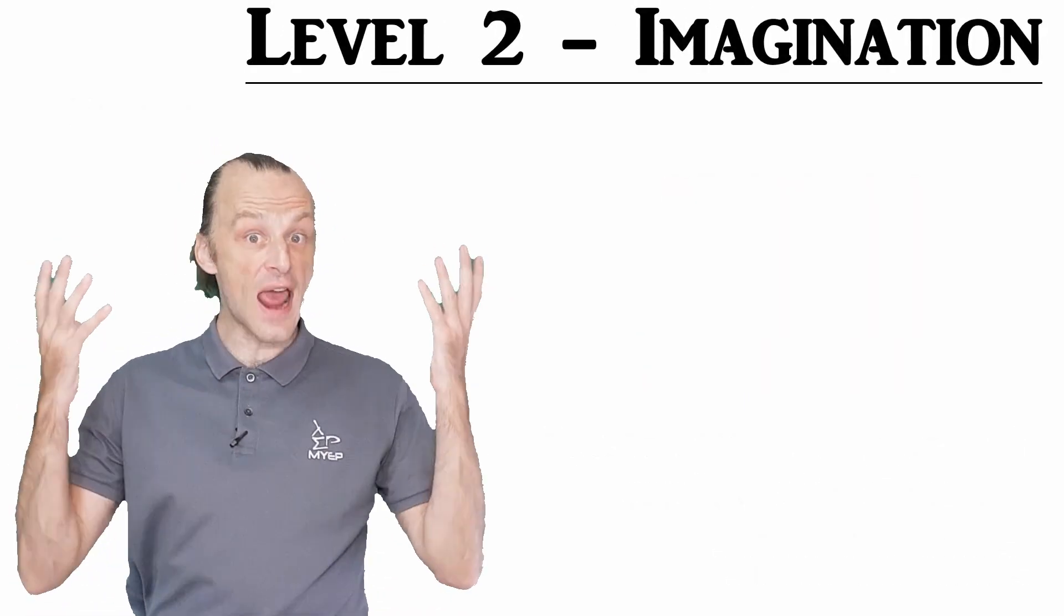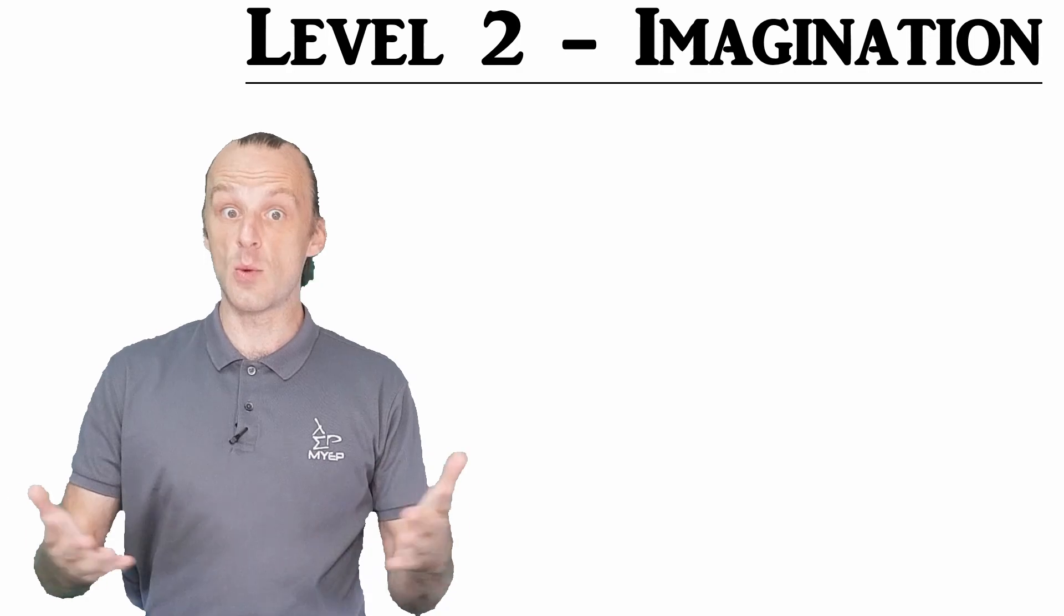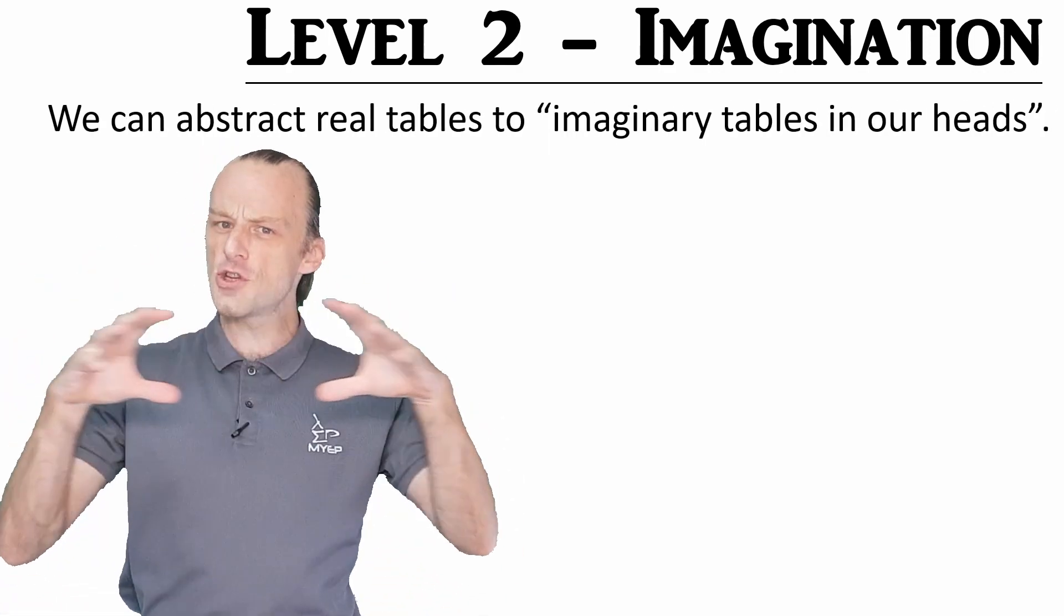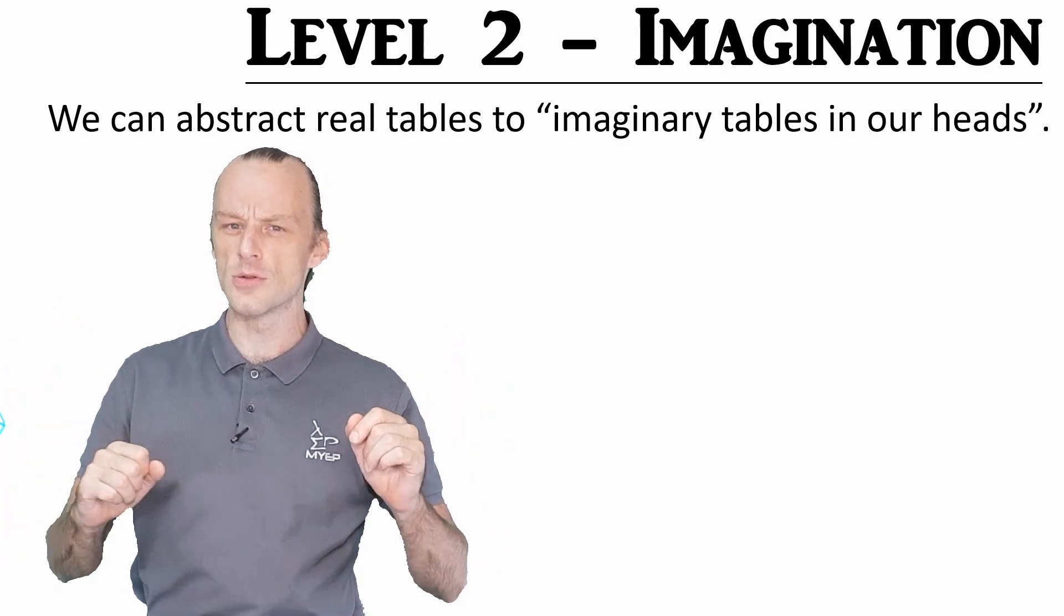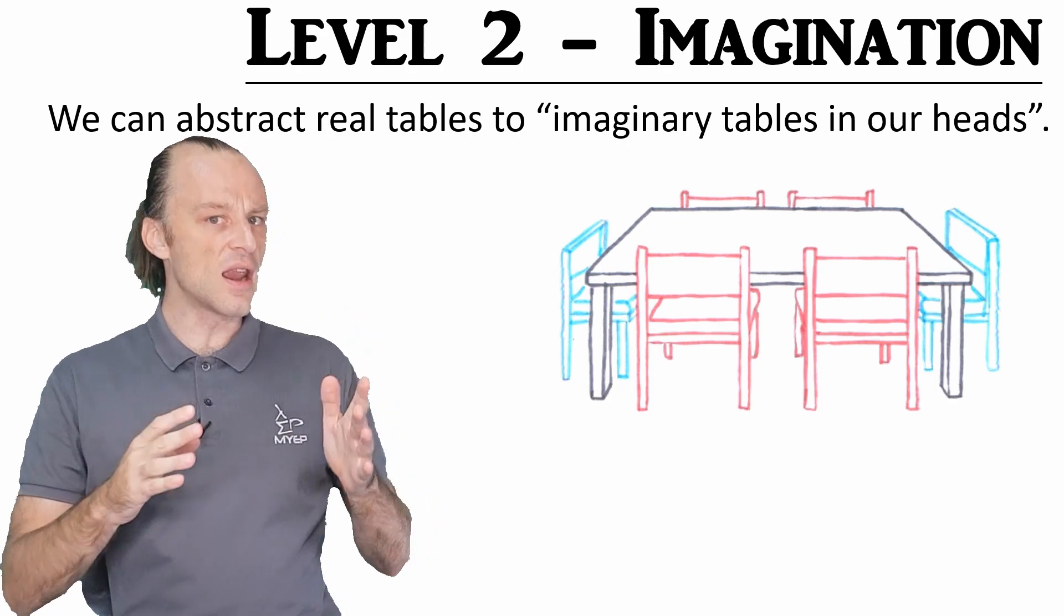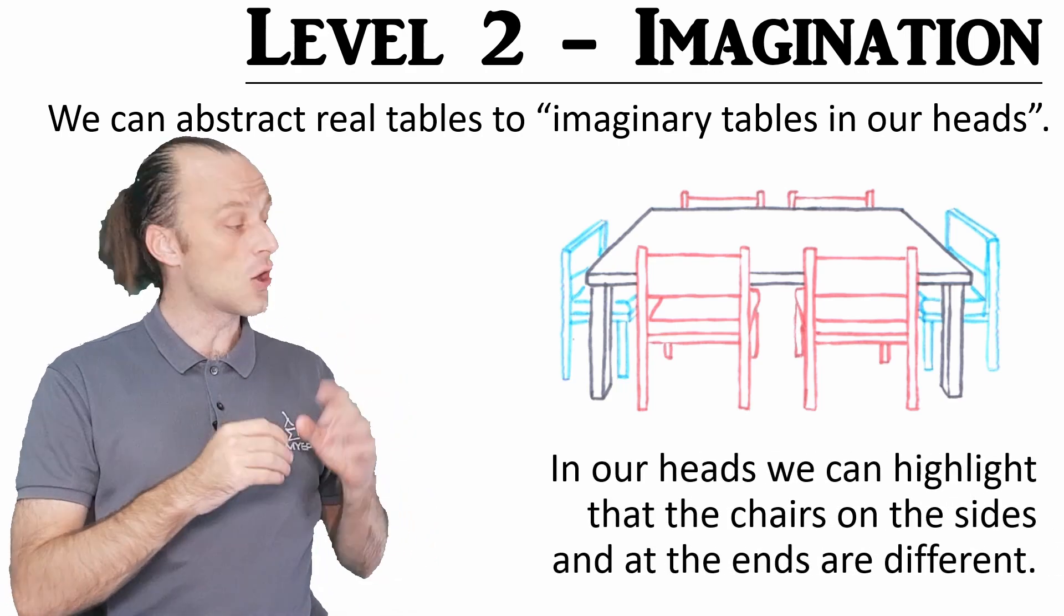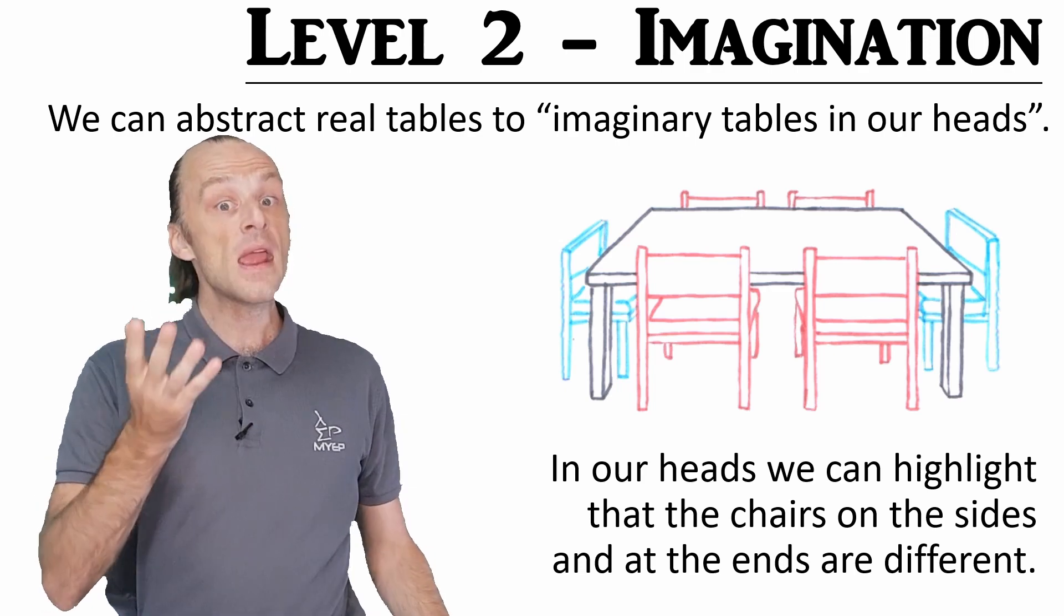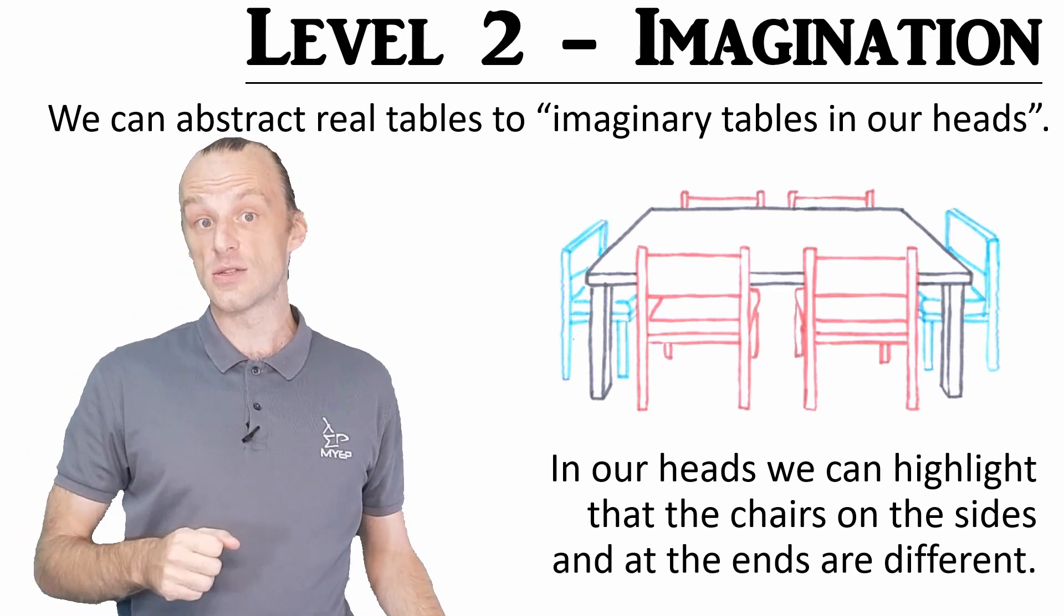Actually, why even have models at all? If we want, we can just imagine tables in our head and visualise what they look like in rows. When we look at them like this, we can easily highlight the difference between the chairs on the ends of a table and the chairs down the side of a table, maybe by using different colours or something.